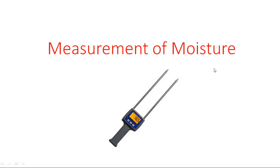Hi everyone. In this video I am going to explain another physical parameter measurement, that is moisture. In the previous two videos I have explained about the measurement of physical parameters force and proximity. In a similar way, the third physical parameter is moisture. Moisture is nothing but the water content present in vapor, like vapor present in the atmosphere.